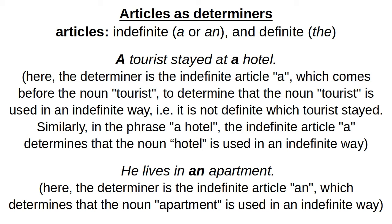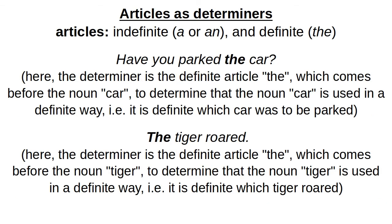Another example: 'he lives in an apartment.' Here the determiner is the indefinite article 'an,' which determines that the noun 'apartment' is used in an indefinite way — we are not specific or definite about the apartment. On the other hand, if you are specific and definite, then you use the definite article 'the.'